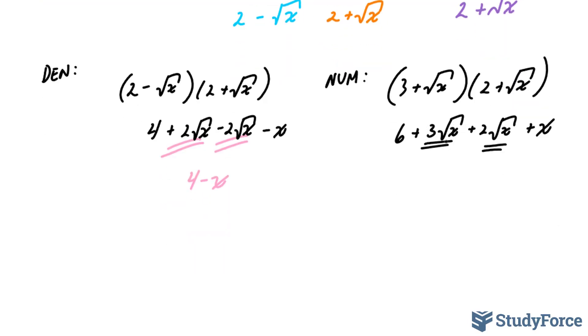Let's combine these two. We end up with 6 plus 5 square root of x—I've only combined the coefficients—plus x over 4 minus x.